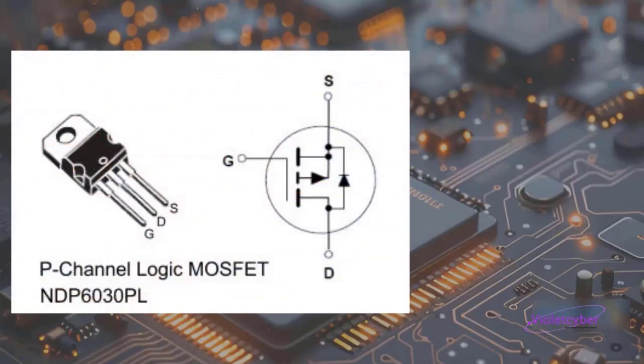P-channel MOSFETs have two positive terminals, which is why they are called P-channel MOSFETs. Typically, in P-channel MOSFETs, the source pin is connected to the negative terminal of the power supply or the circuit's negative rail.